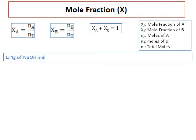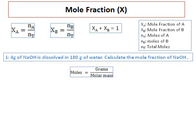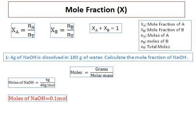Question: 4 grams of sodium hydroxide is dissolved in 180 grams of water. Calculate the mole fraction of sodium hydroxide. NaOH is the solute and water is the solvent. We need the number of moles of each, using moles equals grams over molar mass. Moles of NaOH equals 4 grams divided by 40 grams per mole, which gives 0.1 moles.